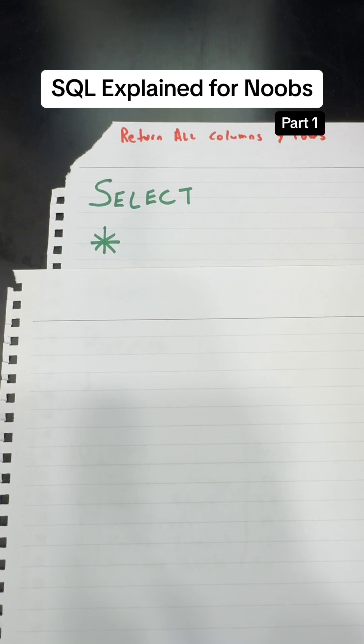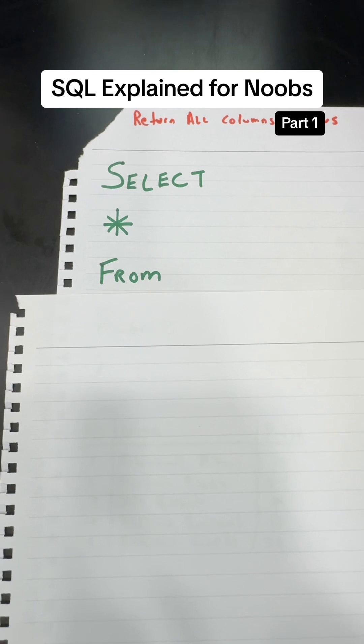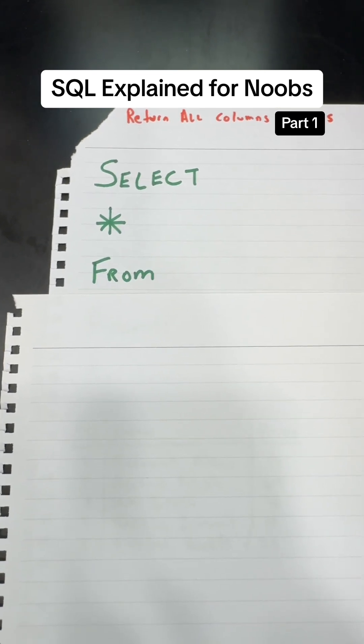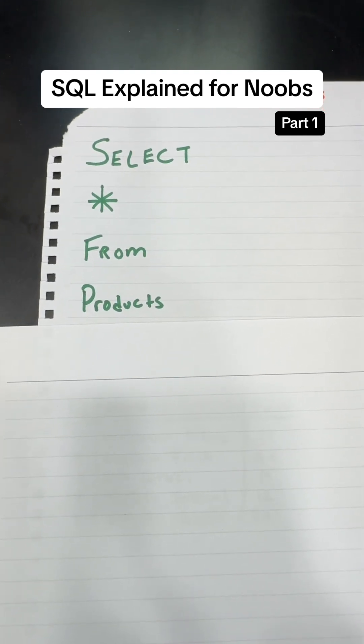Then you have to tell SQL well what data table do you want all columns from. So you use the from statement followed by the name of the actual table. In this case that is products.